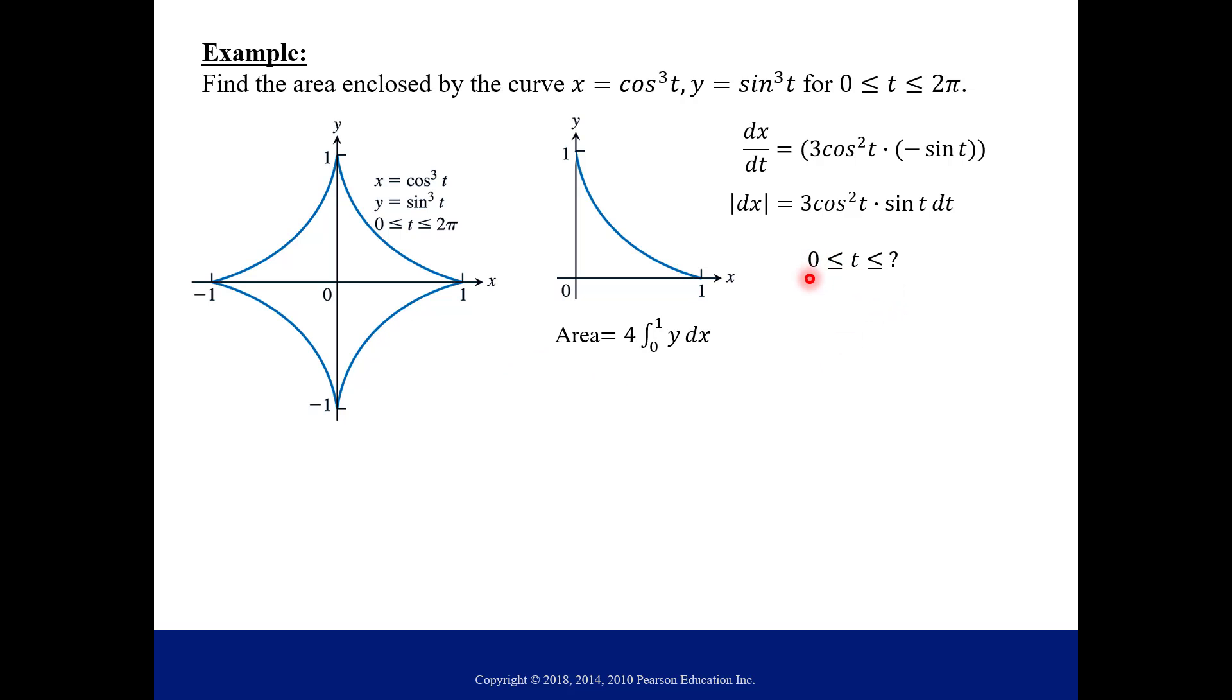Now what about t? What do our t values go between if we only want this part of the curve? Sometimes you can intuitively figure out what this is going to be, but I'm going to show you how to solve for it. You want to figure out what are x and y at this point where we're stopping. If x is 0 and y is 1, we just plug those into our equations and solve for t. We cube root both sides of this equation, and then we have cosine inverse and sine inverse to find t. You don't necessarily have to use both equations to find t, but I wanted to show you that you would get the same answer either way.